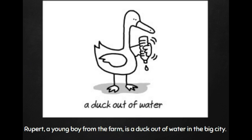You can also have metaphors that could almost be slightly reworded to be similes. "Rupert, a young boy from the farm, is a duck out of water in the big city." By saying he is a duck out of water, there's no word like and no word as — it's still a comparison between him in the city and a duck not in water. The implication is that ducks belong in the water, and he doesn't belong in the big city. If we add the word "like," it becomes a simile; without it, it's a metaphor.